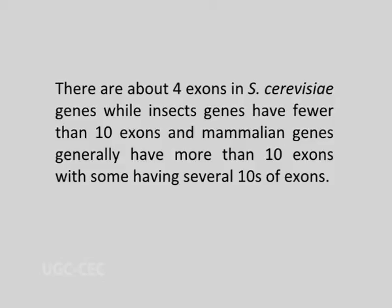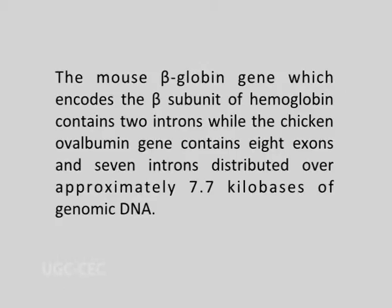There are about 4 exons in Saccharomyces cerevisiae genes, while insect genes have fewer than 10 exons and mammalian genes generally have more than 10 exons, with some having several tens of exons. A gene may contain one or several introns and the size of introns also varies. For example, the mouse beta globin gene, which encodes the beta subunit of hemoglobin, contains 2 introns, while the chicken ovalbumin gene contains 8 exons and 7 introns distributed over approximately 7.7 kilobases of genomic DNA.